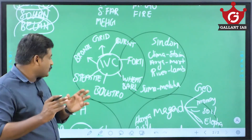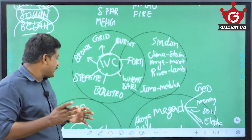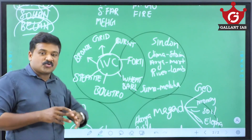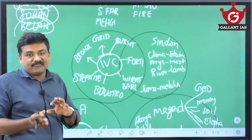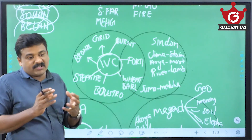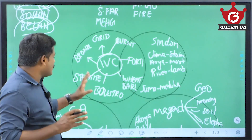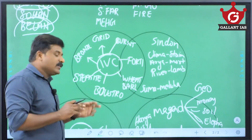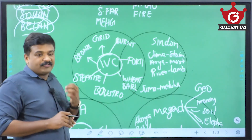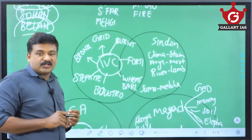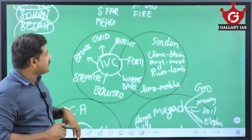Every city was a fortified city with citadel and lower town divisions. Wheat and barley were important crops cultivated. They used a script which is Boustrophedon — written right to left and then left to right — it is mostly pictographical signs and symbols and has not been deciphered. Steatite was the chief material used for their seal making, one of the most sophisticated artistic works of the Indus people.